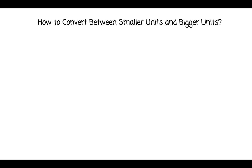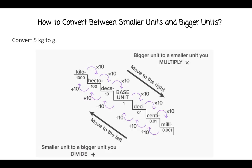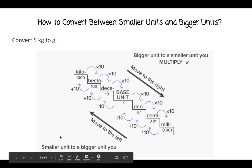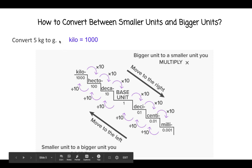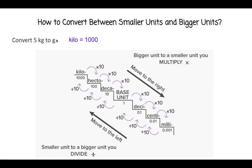So how do you convert between smaller units and bigger units? This is something I noticed we're having trouble with from your exit tickets. How would I convert five kilograms to grams? Here's a chart — if we're going from bigger units to smaller units, you're always going to multiply. If we're going from smaller units to bigger units, we divide. We're going from kilograms to grams, so we're going from bigger to smaller — we multiply.